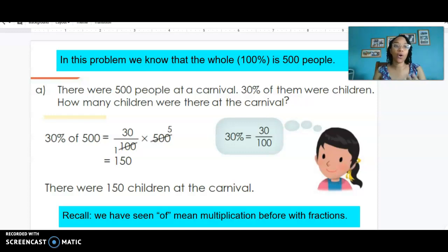In this problem we know that the whole 100% is 500 people. So this is just showing you the steps of multiplication we can do. Remember, 30% of 500 - those are our words. We're going to translate that into math. Our 30% turns into a fraction: 30 out of 100. The word 'of' turns into a multiplication because we know that multiplication means equal groups.